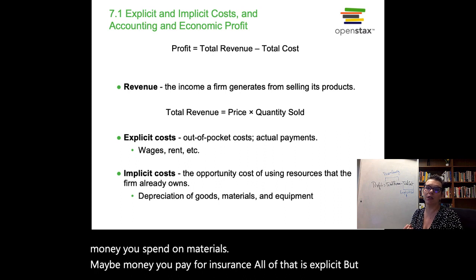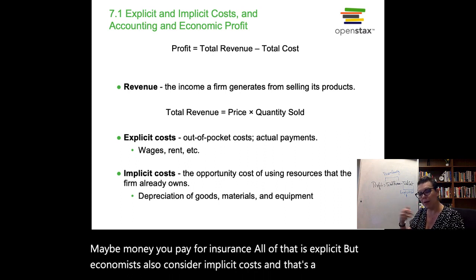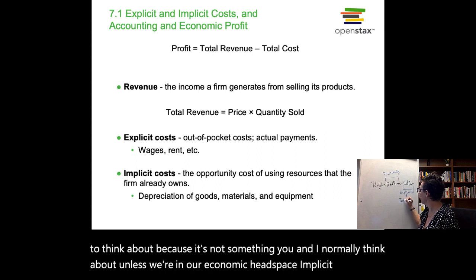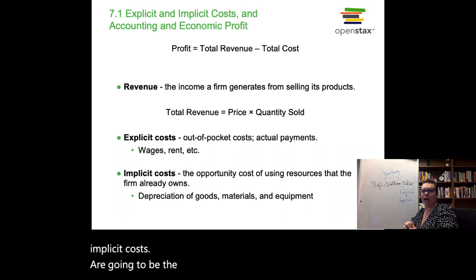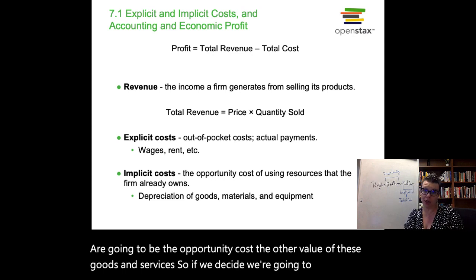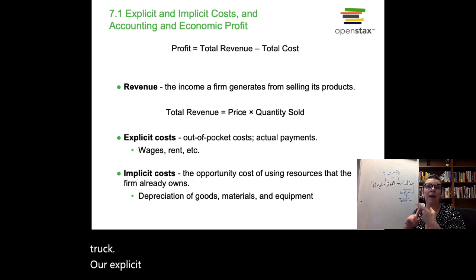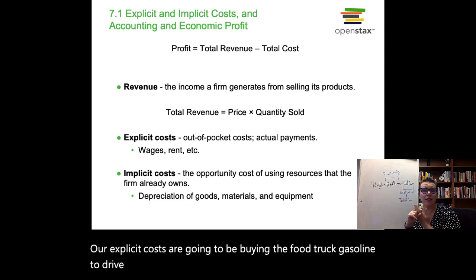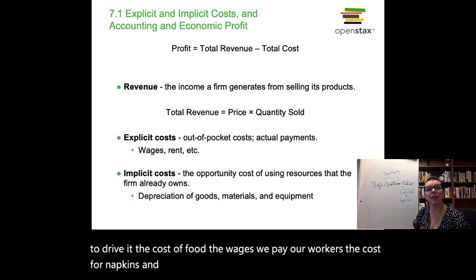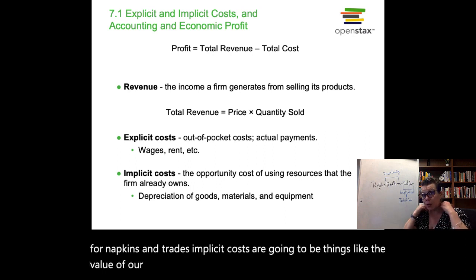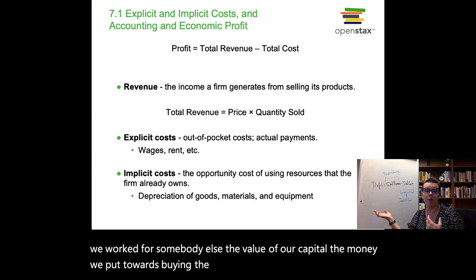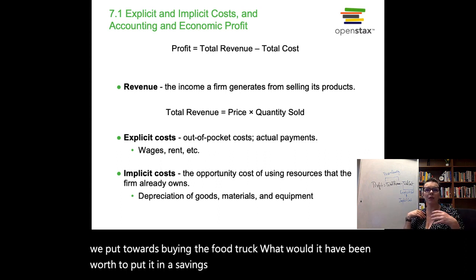But economists also consider implicit costs. Implicit costs are a little bit harder to think about because it's not something we normally think about unless we're in our economic headspace. Implicit costs are the opportunity cost — the other value of these goods and services. So if we decide we're going to start a food truck, our explicit costs are the food truck itself, gasoline, the cost of food, wages we pay workers, napkins and trays. Implicit costs are things like the value of our entrepreneurship — the money we could make if we worked for somebody else, or what it would have been worth to put our capital in a savings account. It's the opportunity cost of resources.